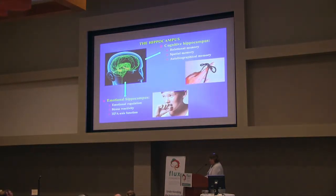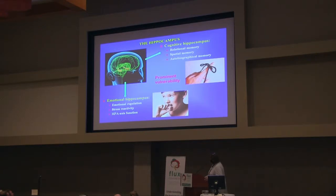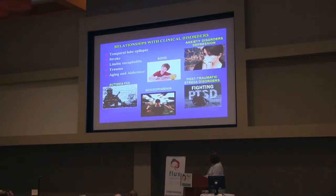One other thing we have learned is that the hippocampus is very vulnerable early in age — vulnerable to hypoxic events, ischemic events, and stress-related events, as we have learned from rodents. It is a very important structure to study across development. This vulnerability of the hippocampus has been linked to many developmental disorders in humans, as I have tried to portray here in this slide.